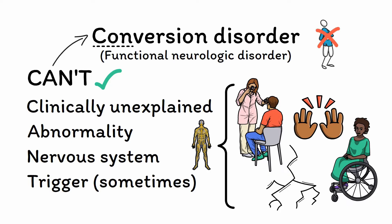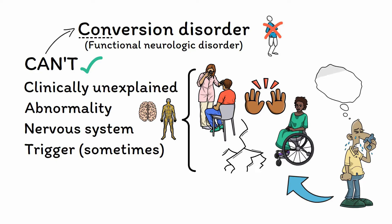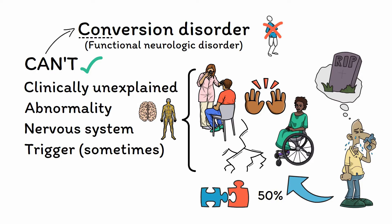Given that most neurologic deficits involve areas that people have voluntary control over, it's easy to conclude that people with conversion disorder are either faking it or just not trying hard enough. However, the 'can't' of cantversion disorder reminds us that, despite how it may feel to an outside observer, people with conversion disorder are not faking their disability. Historically, the DSM required that there be a recent stressor in the patient's life — with the stressor being the thing that is converted into the neurologic abnormality — but only about 50% of people with conversion disorder have a recent stressor, so it's no longer required for a diagnosis, even if it can still be an important diagnostic clue in some cases.